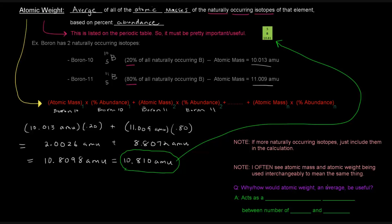So I do have a question, though. Why or how would atomic weight, an average value, be useful? It's super useful because it can act as a conversion factor, as a conversion factor, between the number of atoms and mass.